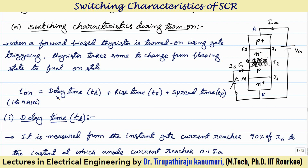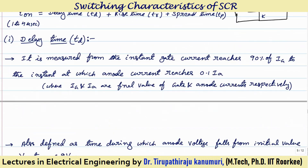T_on can be divided into delay time, rise time, and spread time. Even when the current starts from anode to cathode, the current will not spread to the entire area immediately — it will first concentrate in a small area and gradually take some time to spread over the entire area. That is why it will have all these three time components.